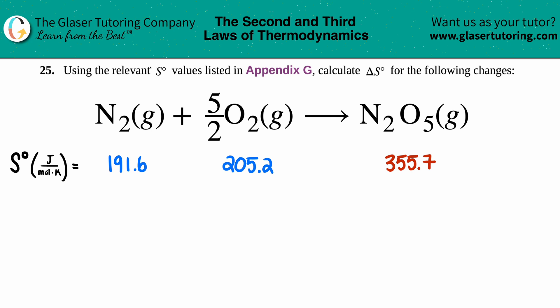Number 25: Using the relevant S° values listed in Appendix G, calculate the delta S° for the following changes. We have N2 gas plus 5/2 O2 gas which yields N2O5 gas.